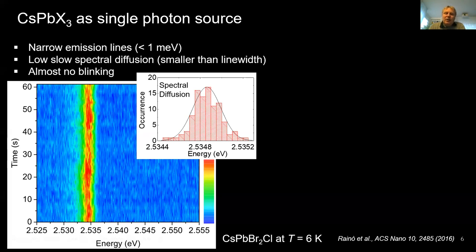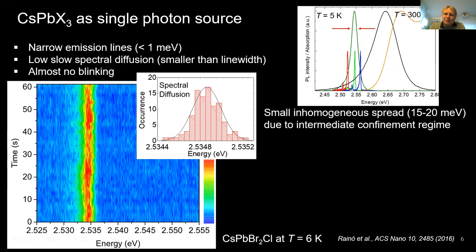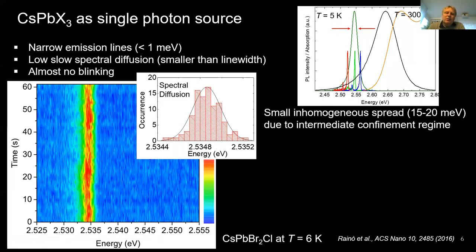An important feature for what I will discuss is that they have very small inhomogeneous spread — how much the energies differ across an ensemble of quantum dots — only about 15 to 20 meV, very narrow compared to any other quantum dots. This is due to the intermediate confinement regime: the quantum dots are relatively large, about 10 to 50 nanometers, and the exciton Bohr diameter is typically around 7 to 8 nanometers — slightly smaller than the quantum dot. So a small size dispersion doesn't significantly affect the wavelength.